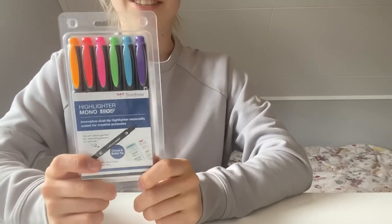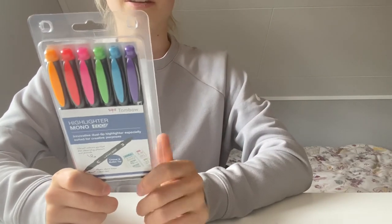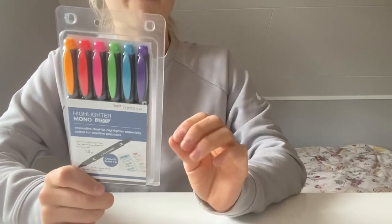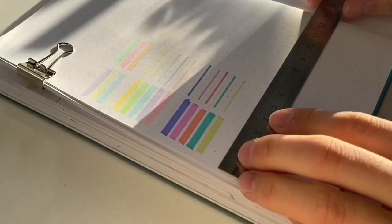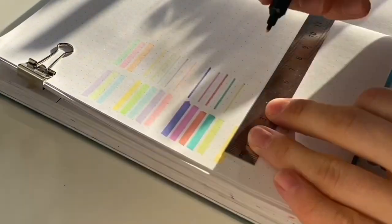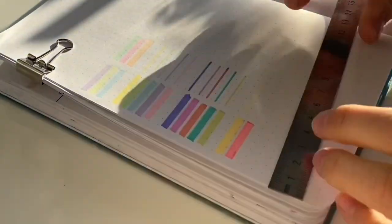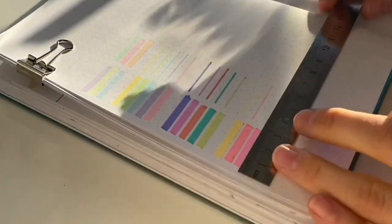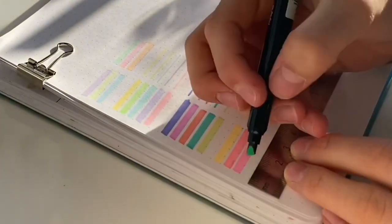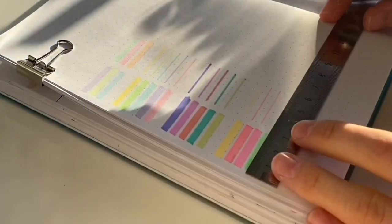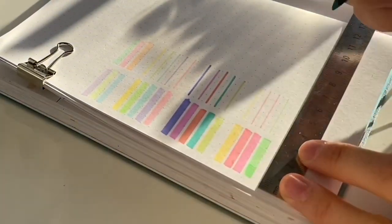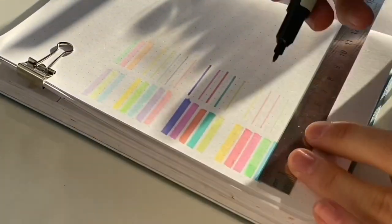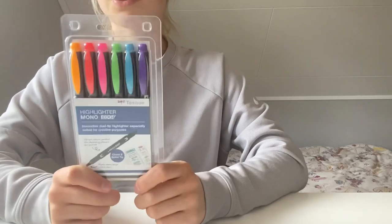The thing with these highlighters is that they have plastic around them so you can use them together with a ruler, and that's something that I use a lot. I have a metal ruler, so I'm kind of afraid to ruin my Mildliners with the ruler, but I won't have that problem anymore with these highlighters.